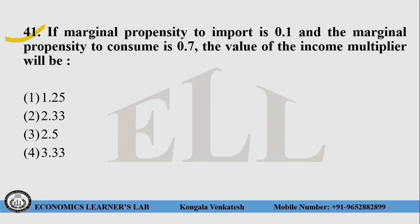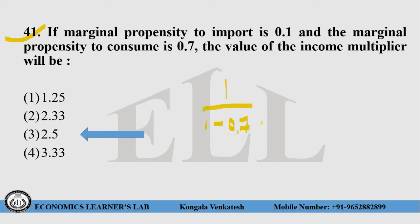Question number 41: If marginal propensity to import is 0.1 and marginal propensity to consume is 0.7, the value of income multiplier will be: choice 1 — 1.25, choice 2 — 2.33, choice 3 — 2.5, choice 4 — 3.33. The right answer is choice number 3, that is 2.5. You can solve this as 1 divided by (1 minus 0.7 plus 0.1), and when you solve this equation you will get the answer.